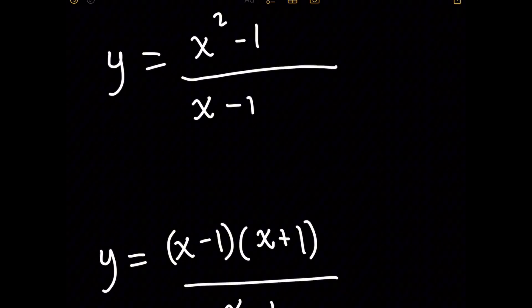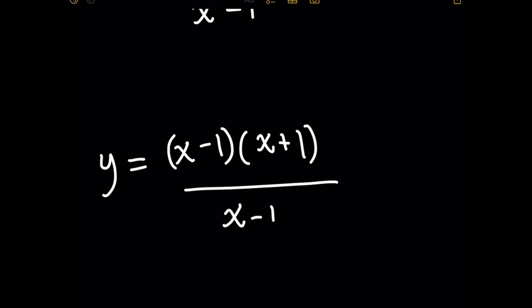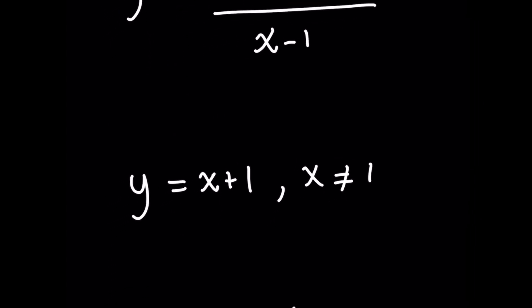Mario is not the greatest at math, but he does the right thing in the beginning by factoring the numerator, giving him factors x minus 1 and x plus 1. He then realizes there is both an x minus 1 factor on the top and bottom, and so when he cancels them out, y simply becomes x plus 1.